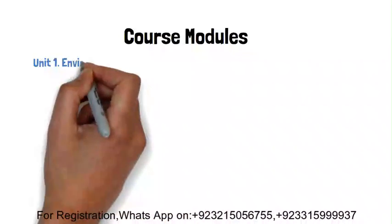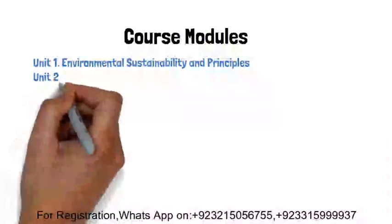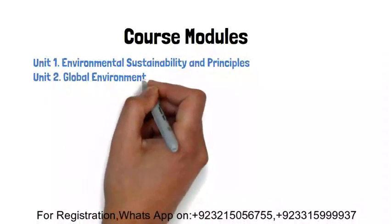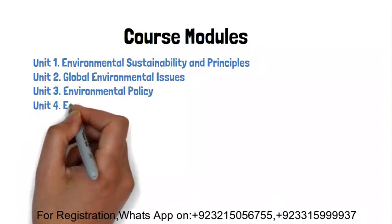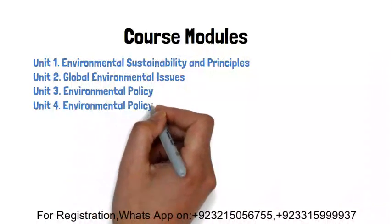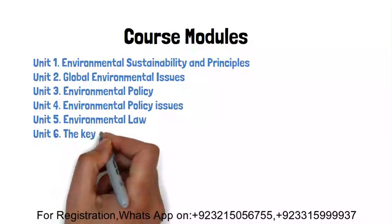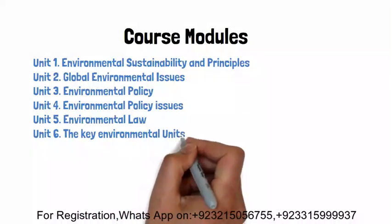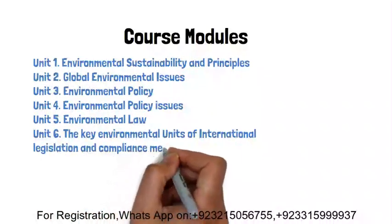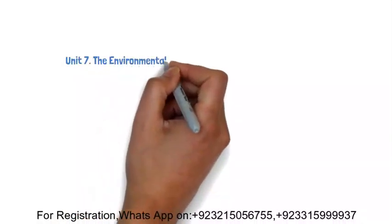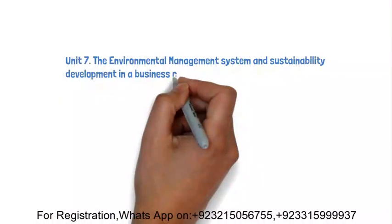The curriculum includes: Unit 1 — Environmental Sustainability and Principles; Unit 2 — Global Environmental Issues; Unit 3 — Environmental Policy; Unit 4 — Environmental Policy Issues; Unit 5 — Environmental Law; Unit 6 — The Key Environmental Units of International Legislation and Compliance Measures; Unit 7 — The Environmental Management System and Sustainability Development in a Business Context.